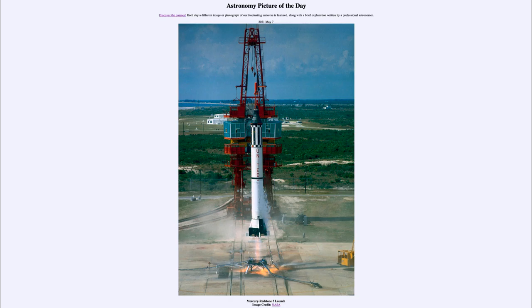This was Freedom 7, the capsule at the top, which carried one astronaut, Alan Shepard, as he went on a suborbital flight — he did not orbit the Earth. The suborbital flight took about 15 minutes, getting up to about 116 miles. So while he ventured into space, he did not actually achieve orbit.